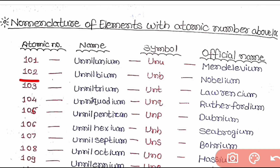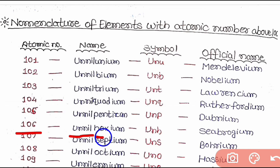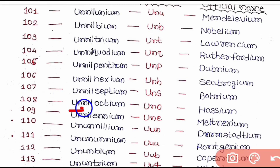For 102: un (1), nil (0), bi (2) with suffix -ium — Unnilbium. Similarly, 103: un, nil, tri, -ium — Unniltrium. 104: un, nil, quad, -ium — Unnilquadium. 105: un, nil, pent, -ium — Unnilpentium. 106: un, nil, hex, -ium — Unnilhexium. 107: un, nil, sept, -ium — Unnilseptium. 108: un, nil, oct, -ium — Unnilocium. 109: un, nil, en, -ium — Unnilennium.